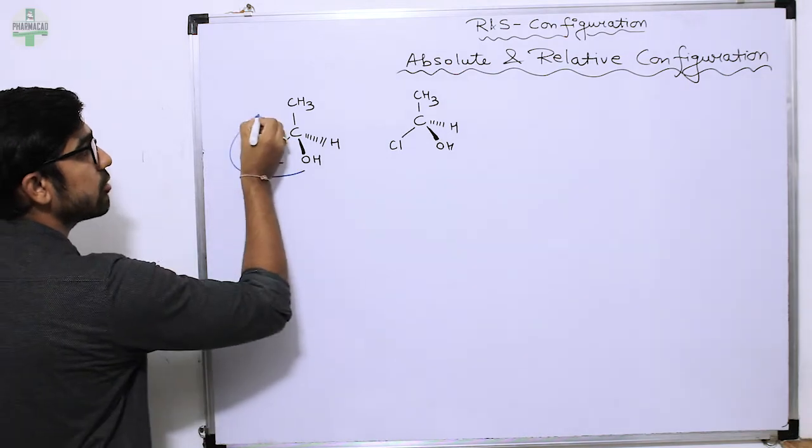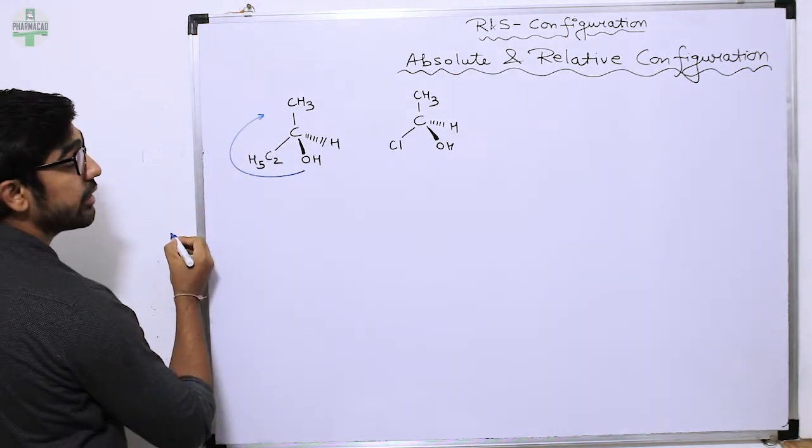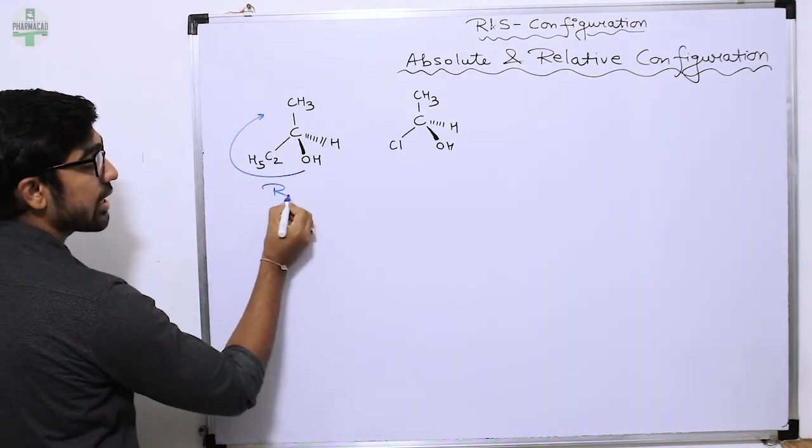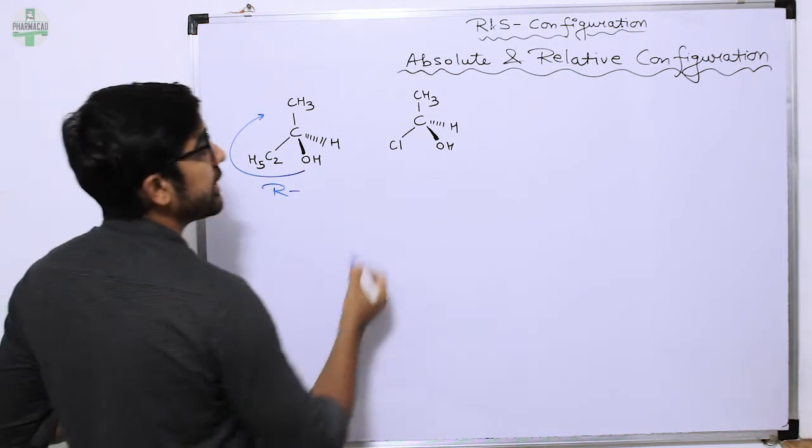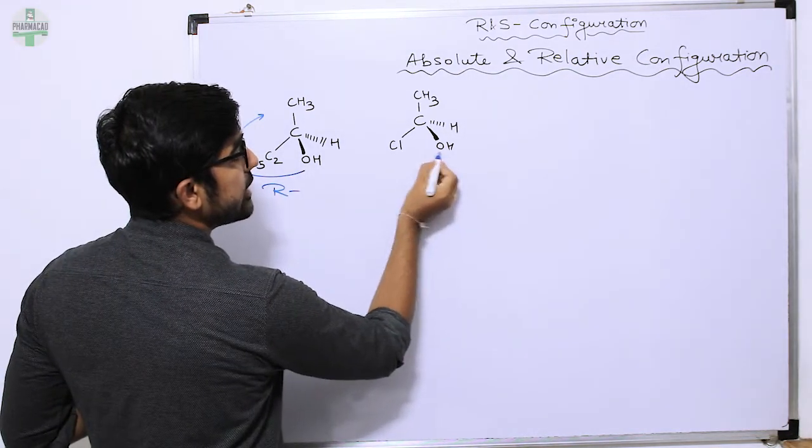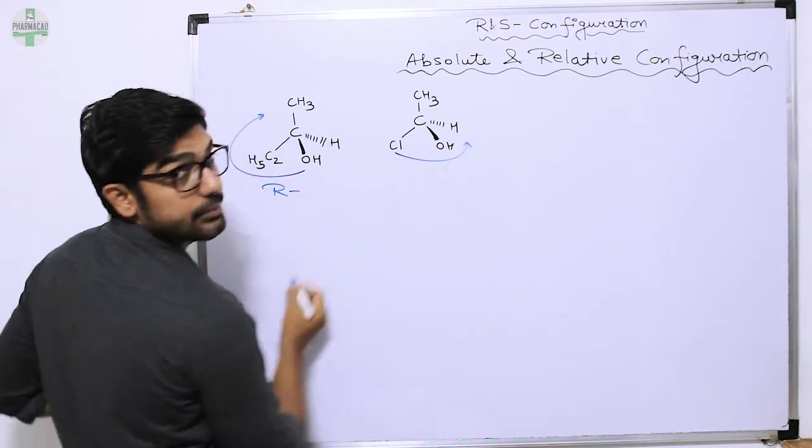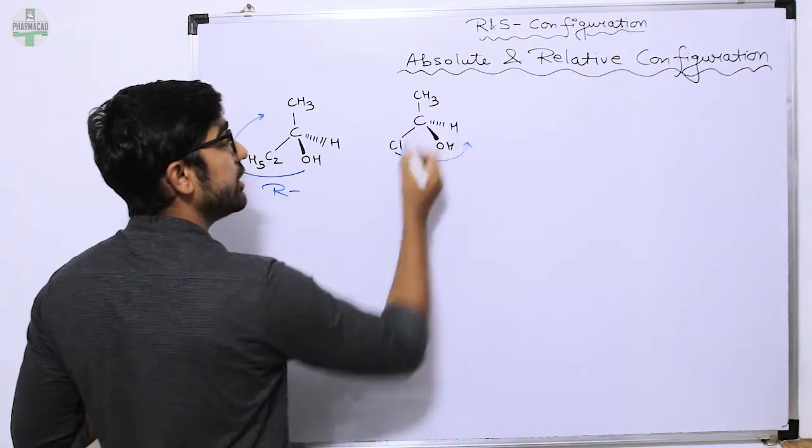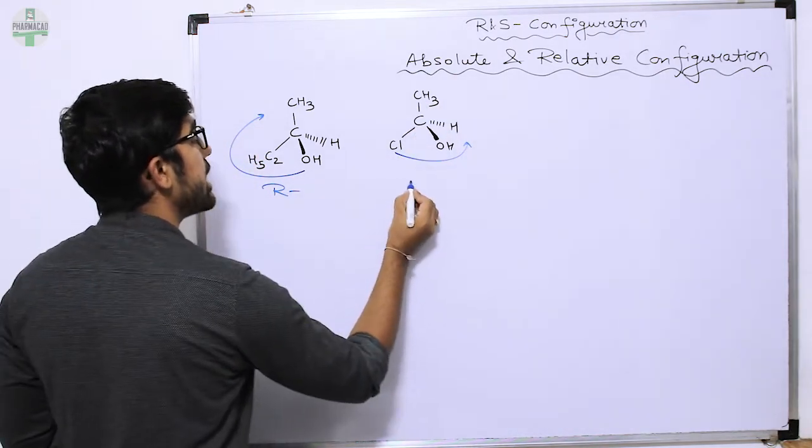So this is how the direction goes. Configuration clockwise, then R configuration. Here priority will be Cl and then OH, so this is how it goes anti-clockwise. Configuration will be S configuration.